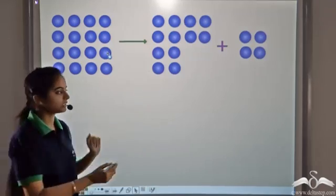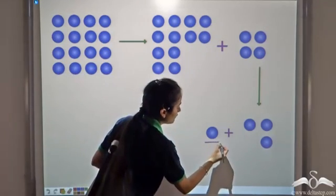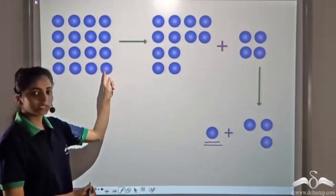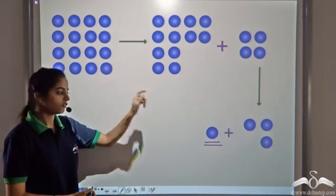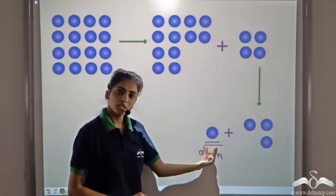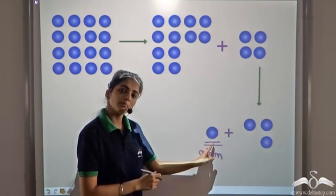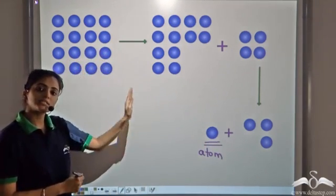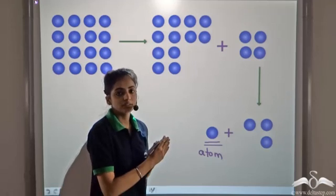If we further break this element down to just one atom, the physical and chemical properties of that atom are the same as any other atom in the element. The smallest unit of an element is an atom. At this stage, we can interchange the term atom with an element, since they share the same physical and chemical properties.